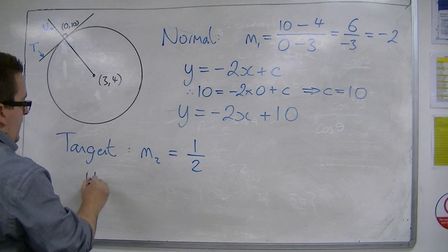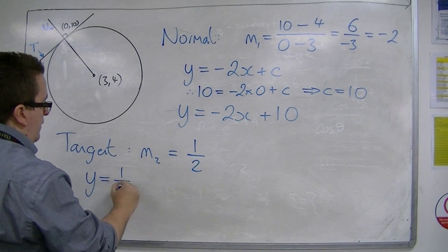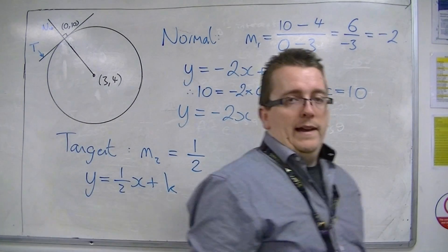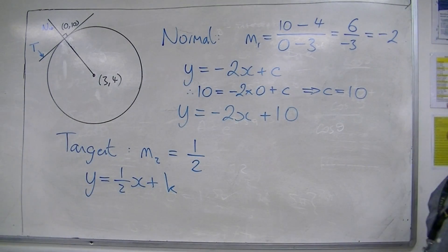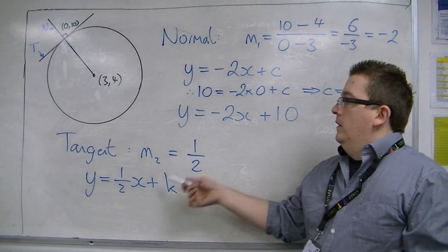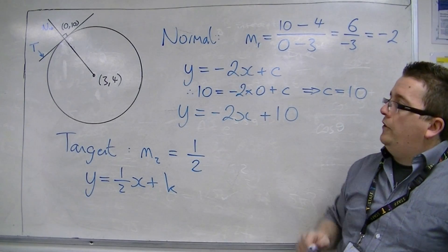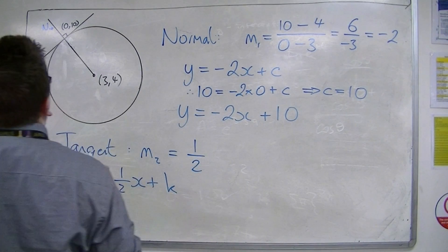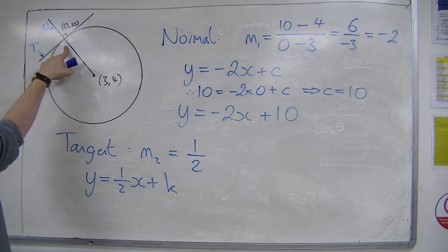So, the equation of the tangent is y equals 1 half x plus a constant. I've used c, so I'm going to use k. Now, which point can I substitute in to find k? The only point that I can substitute in is (0, 10). Okay?